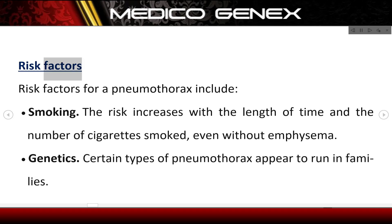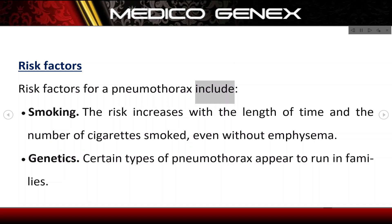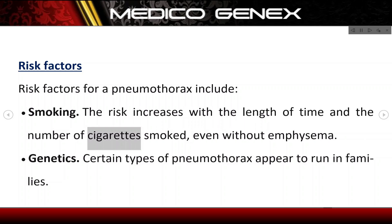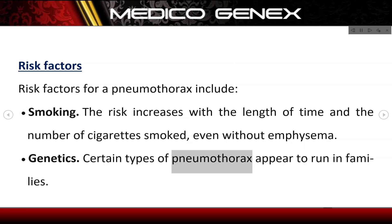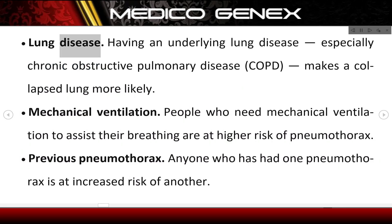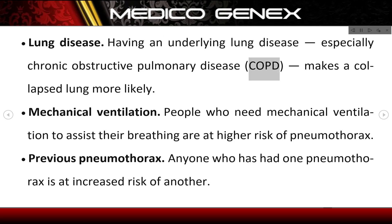Risk factors. Risk factors for a pneumothorax include: Smoking — the risk increases with the length of time and the number of cigarettes smoked, even without emphysema. Genetics — certain types of pneumothorax appear to run in families. Lung disease — having an underlying lung disease, especially chronic obstructive pulmonary disease (COPD), makes a collapsed lung more likely.